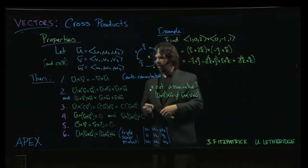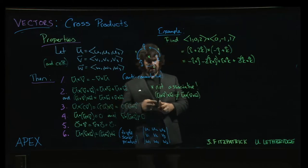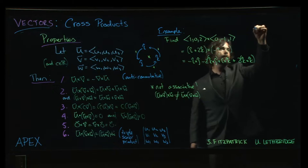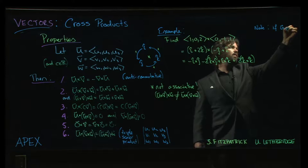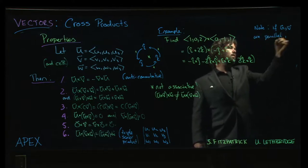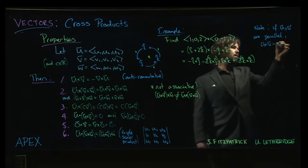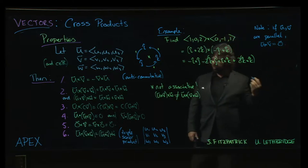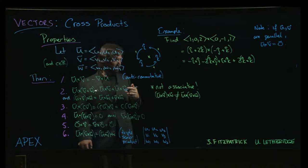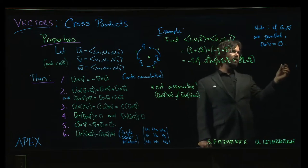In fact, using property three here, we might notice that if u and v are parallel, then u cross v will be zero. So sometimes you could use it as a test for parallelism. Although, usually you can check if vectors are parallel by inspection because being parallel means that, for example, I could write v as a scalar multiple of u.